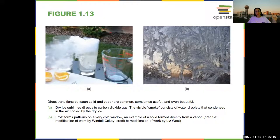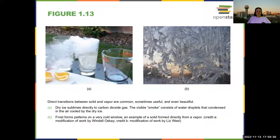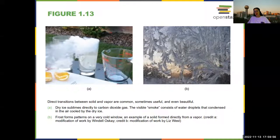Here you can see sublimation — direct transitions between a solid and a vapor. For example, carbon dioxide: if you buy dry ice and put it in water, the dry ice sublimates, making a visible gas that looks like smoke, often used at Halloween for fancy displays. You can also have the opposite: gaseous water in the air that just freezes on the side of a window.